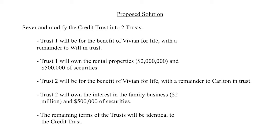The proposed solution is a severance and modification of the credit shelter trust — two steps. First, the severance: dividing the big credit trust into two separate trusts. Trust one, for the benefit of Vivian and Will, will own two million dollars of rental properties and five hundred thousand of securities. Trust two, for Vivian and Carlton, will own the family business interest and five hundred thousand in securities to make the trusts equal in value. The remaining terms of the trusts are otherwise identical.